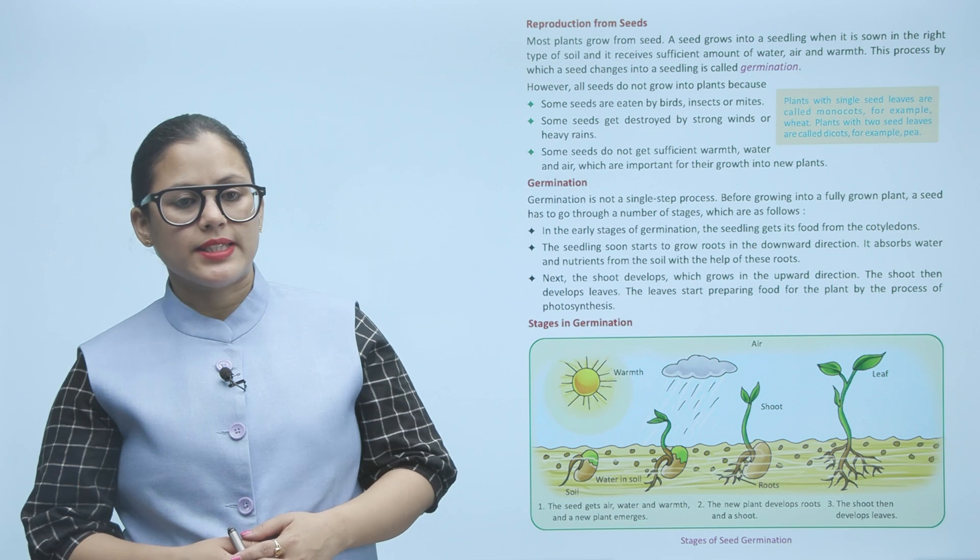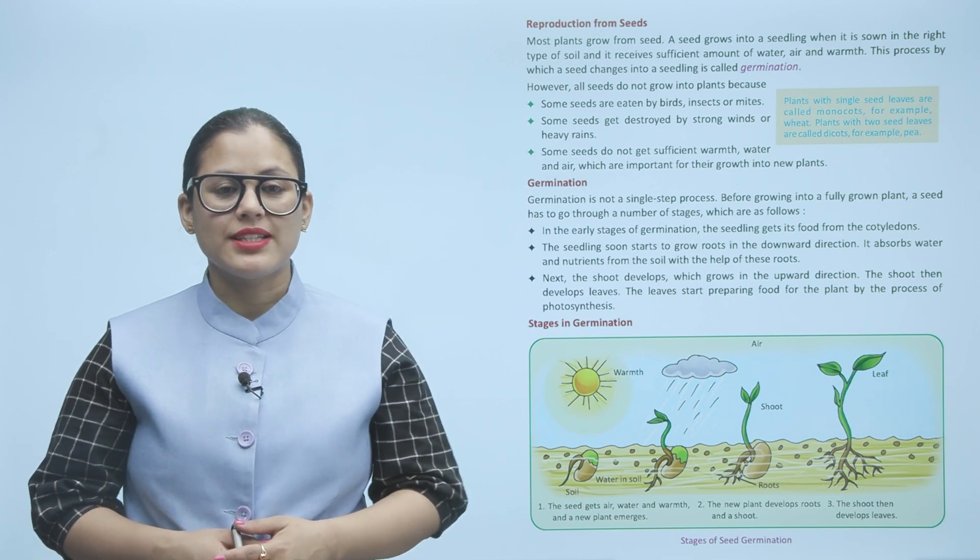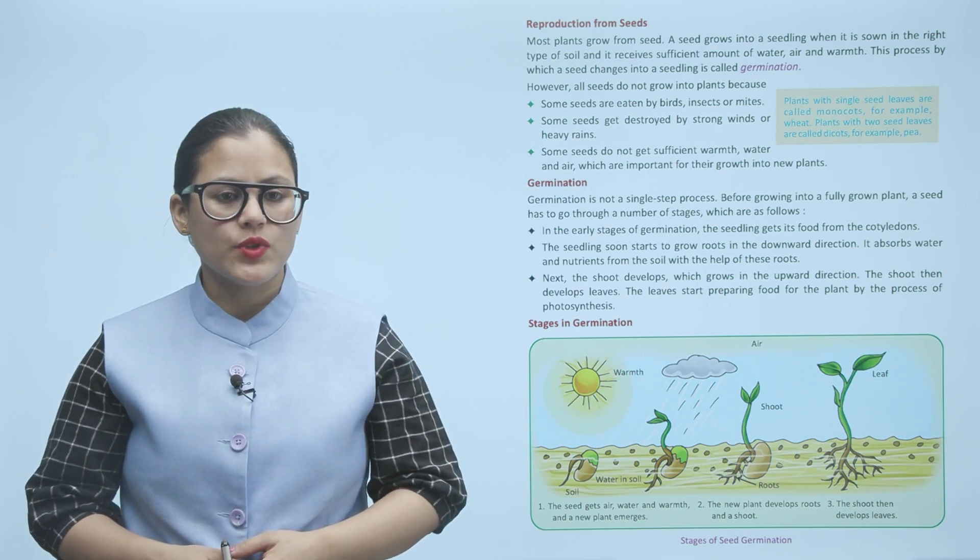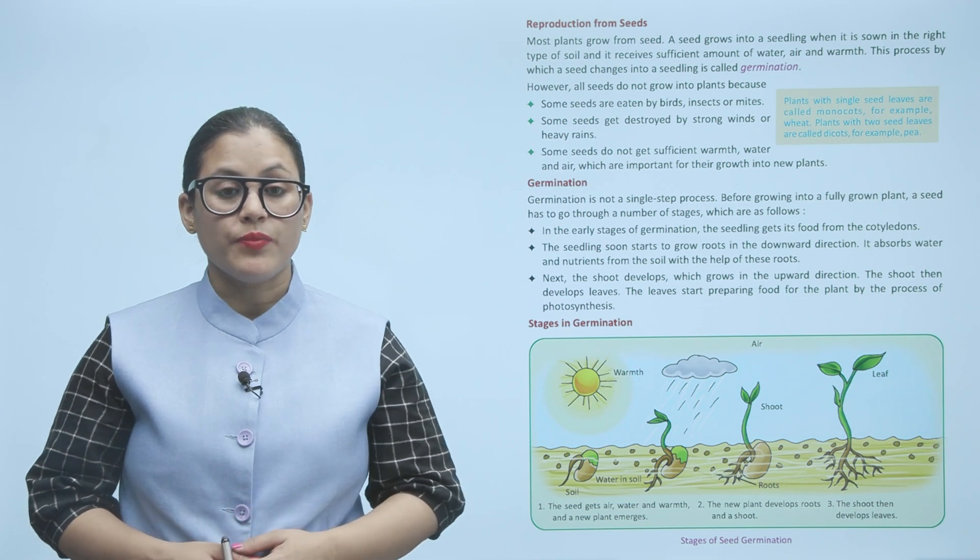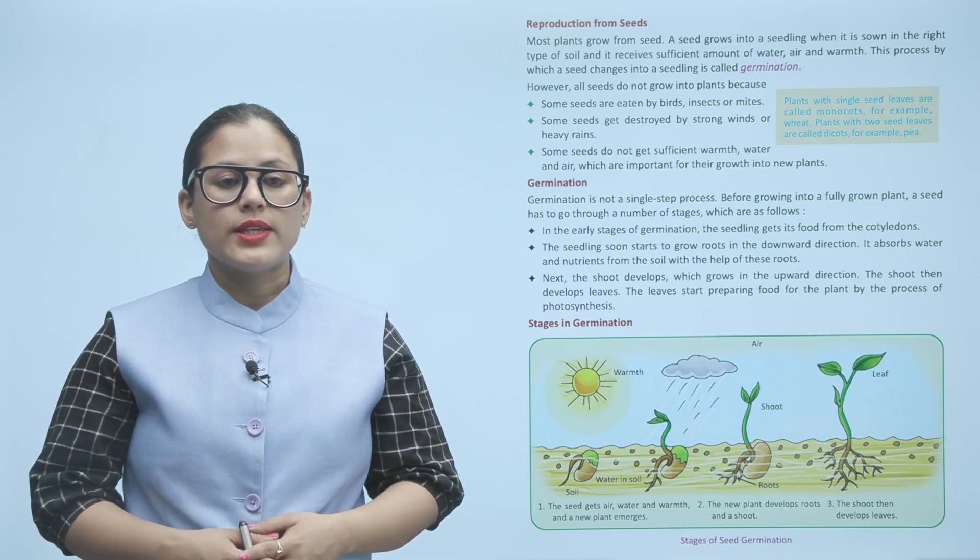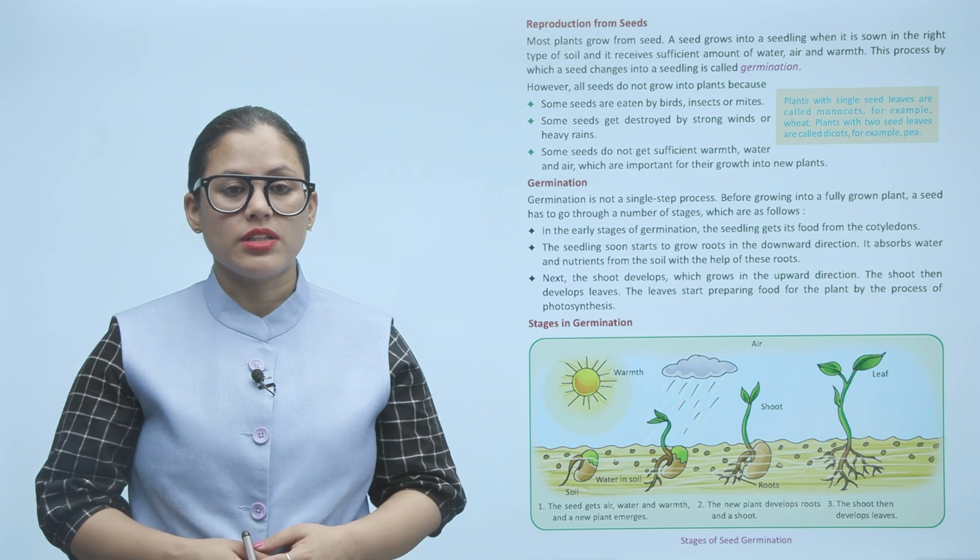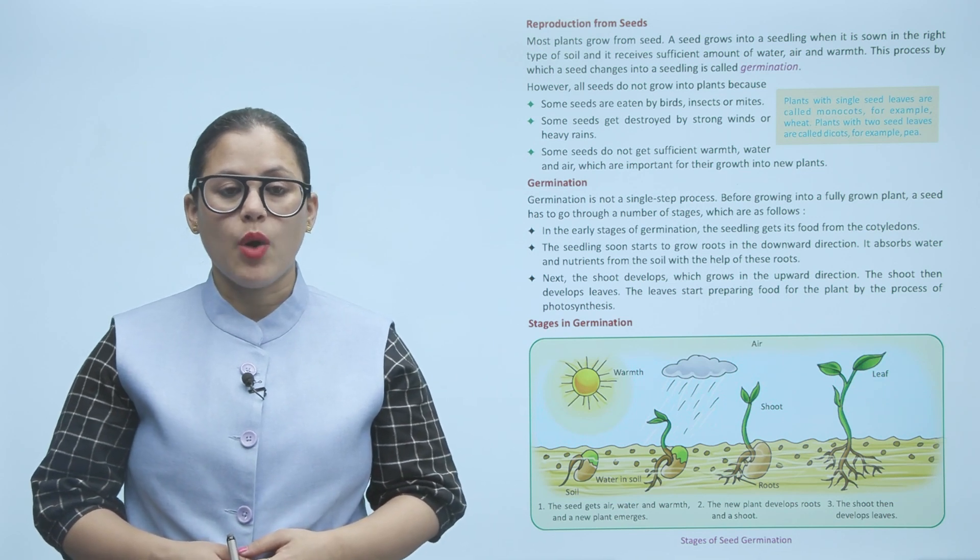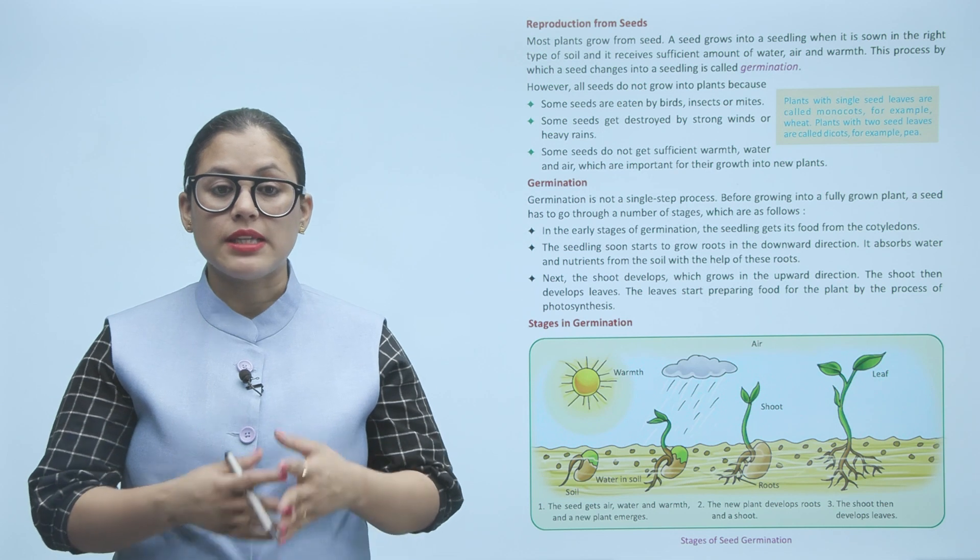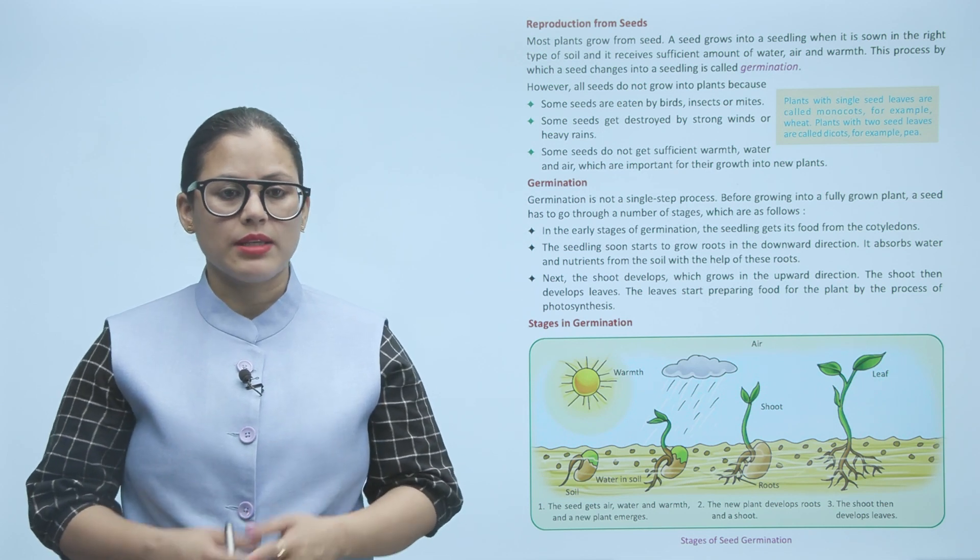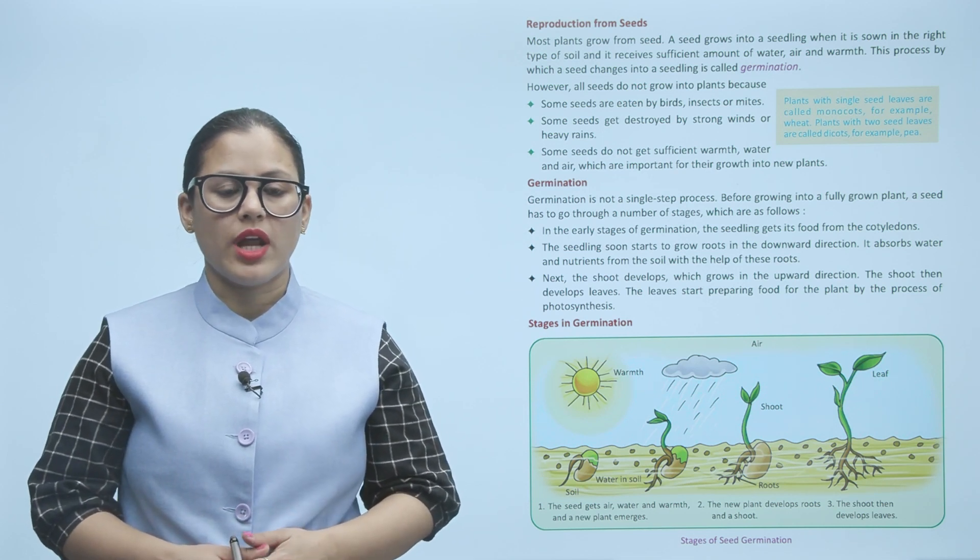Reproduction from seeds: Most plants grow from seed. A seed grows into a seedling when it is sown in the right type of soil and receives sufficient amount of water, air, and warmth. This process by which a seed changes into a seedling is called germination. However, all seeds do not grow into plants.